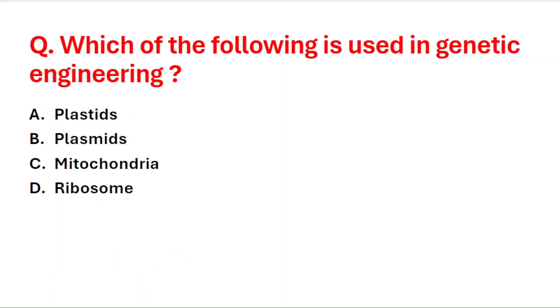Next question: which of the following is used in genetic engineering? A: plastids, B: plasmids, C: mitochondria, D: ribosome. The right answer is option B, that is plasmids.